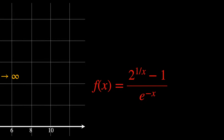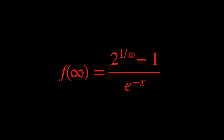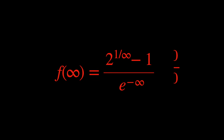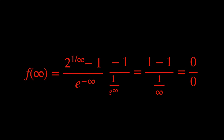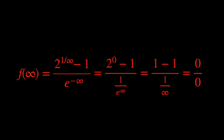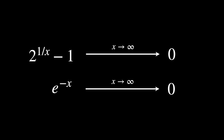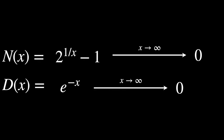If we simply replace x with infinity, we will get 0 over 0. This is an indeterminate form. It doesn't mean that the limit doesn't exist for x tending to infinity, but we do need to find an alternative way of evaluating this limit. The question here is: which one of these functions goes faster to 0 as x tends to infinity — the numerator or the denominator?